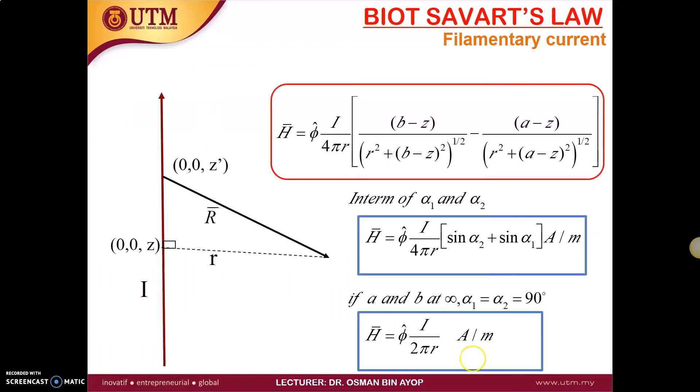Finally we got this form. The H equals in the direction of phi, I over 4 pi R. In the bracket, B minus Z divided by R squared plus (B minus Z) squared, and so on. So we compare this form into what we drew before. The alpha 1 here is basically this is B minus Z. This thing is basically sine alpha 2.